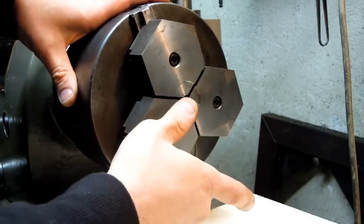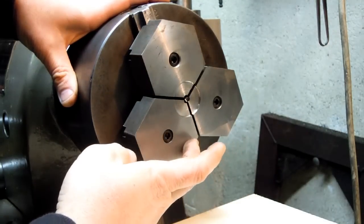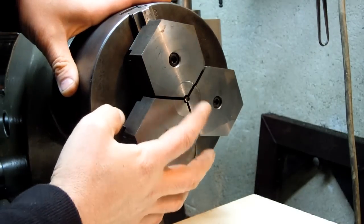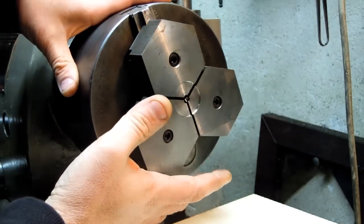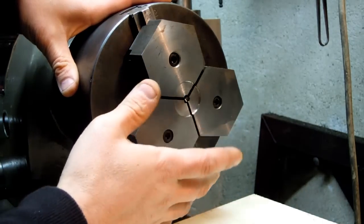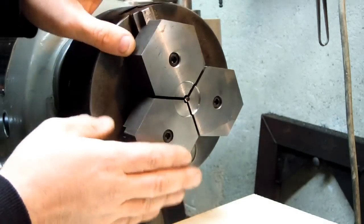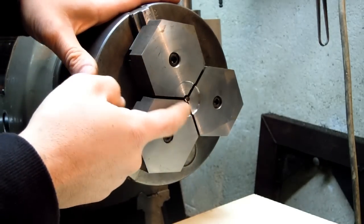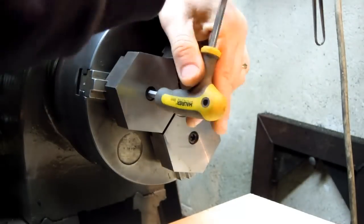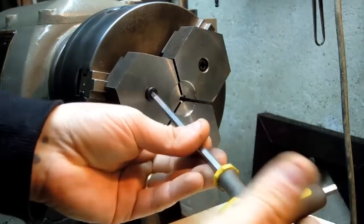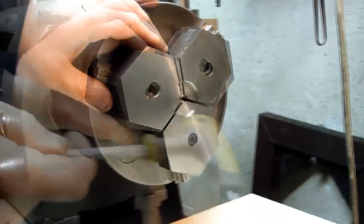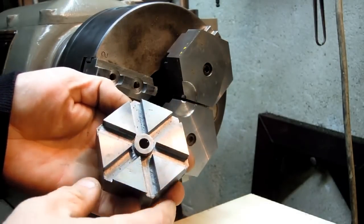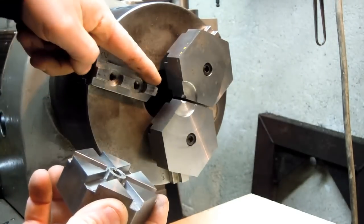They do make these in a split design where you have the actual jaw base and then replaceable or flippable top jaws. But in contrast to something like this, this is a, you have one business end on these and so you make your part and then these are dedicated for that part where you recut them for the next part and you go through them relatively fast. These on the contrary, and I'll take this off and show you, you can take these out and index them into one of six positions, so one set of soft jaws, although a little bit bigger and bulkier, get me potentially six sets.